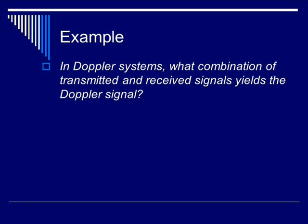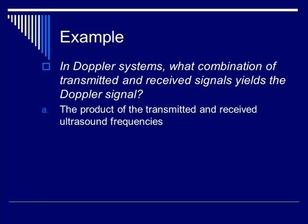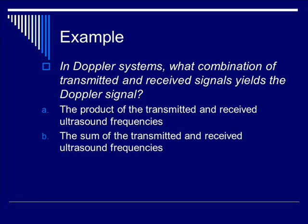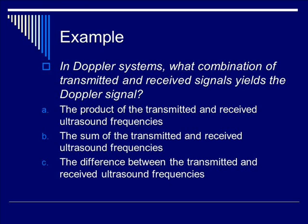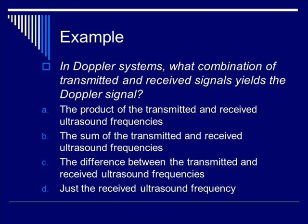Let's do an example. In Doppler systems, what combination of transmitted and received signals yields the Doppler signal? Is it A, the product of the transmitted and received ultrasound frequencies? Is it B, the sum? Is it C, the difference between transmitted and received frequencies? Or is it D, just the received ultrasound frequency? The correct answer is C — the difference between the transmitted and received ultrasound frequencies.